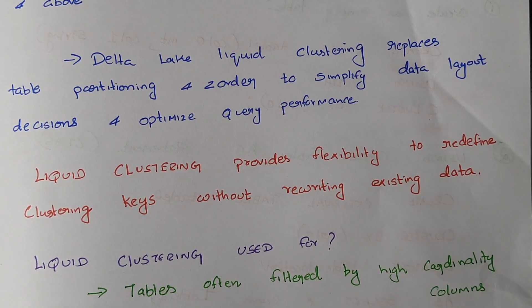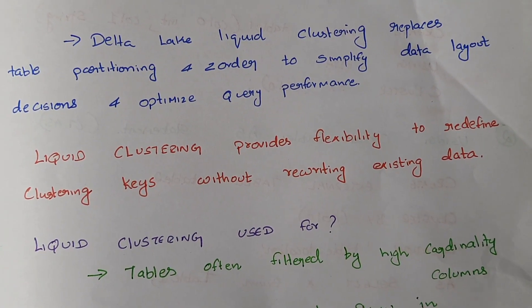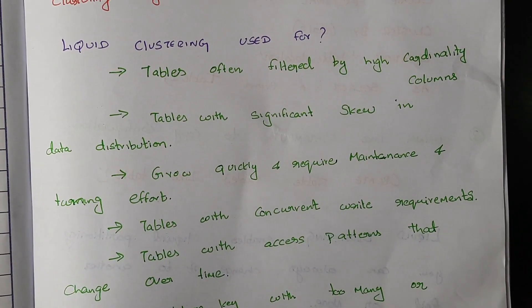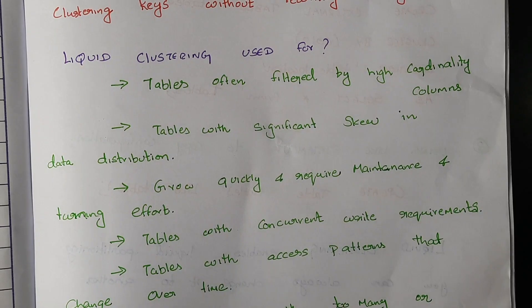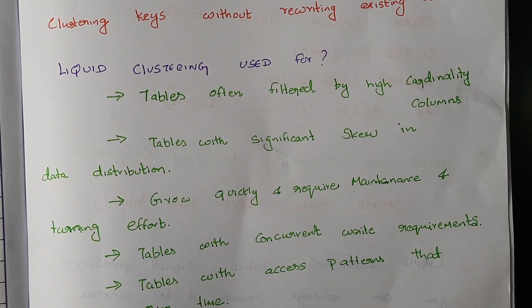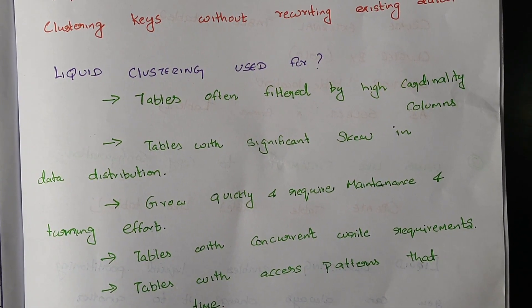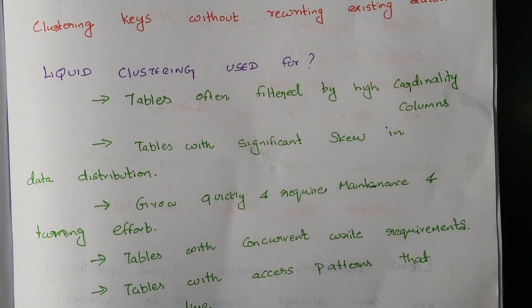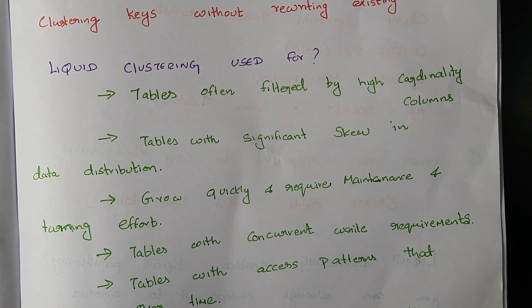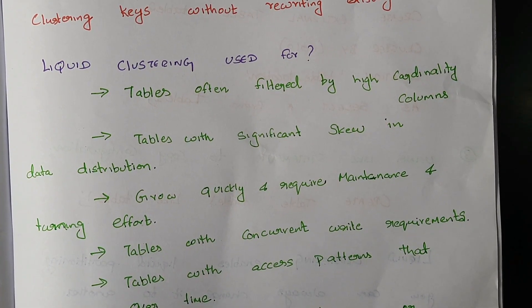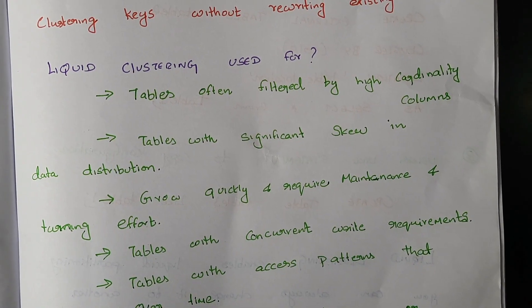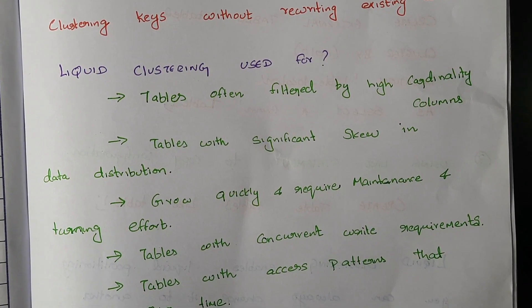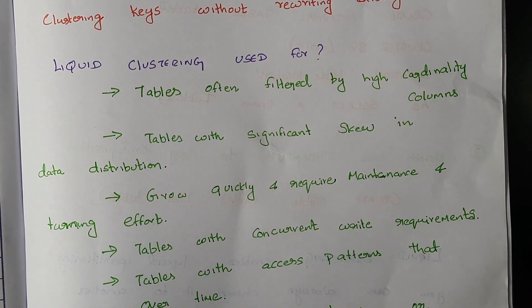Let's look at where to use liquid clustering in Delta tables. It's useful whenever you have a table that is often filtered by high-cardinality columns. It also helps with tables that have significant skew in data distribution — for example, if the partition column has a lot of skewed values in the table.